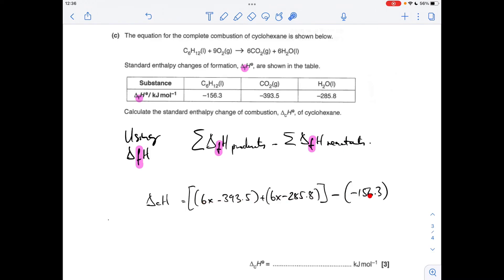So subbing the numbers in gives us this line here. So just remember that you're forming six moles of CO2, so it's six times the value in the table because that's for the formation of one mole but our reaction forms six moles. Likewise for the H2O, multiply that one by six. Subtracting just the one times the value for C6H12 because there's only one mole involved here. Obviously we haven't got a value for oxygen because the enthalpy change of formation of all elements is zero.